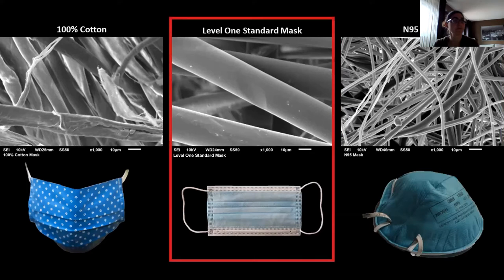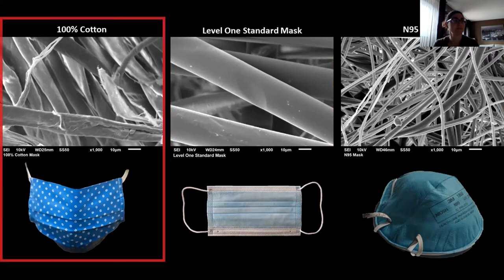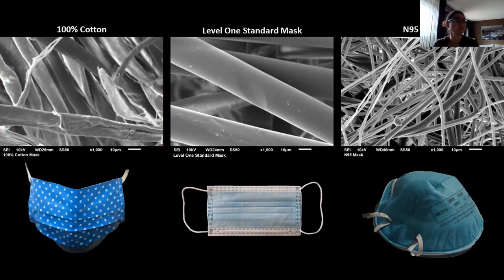Comparing all three masks side by side at 1000x magnification: N95 fibers are about 1 to 10 microns in size; the standard level one fibers are about 20 microns — about twice the scale bar; and the cotton mask is similar in size to the level one but with rougher, less uniform fiber shapes, with less evidence of particle trapping. These three pictures illustrate the purpose: the shape, size, and spacing of the fibers in medical masks help protect us from COVID-19.